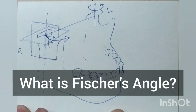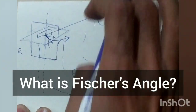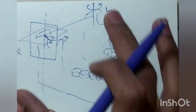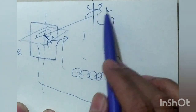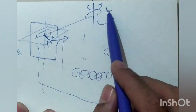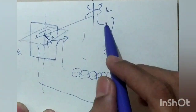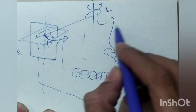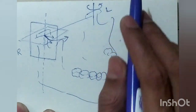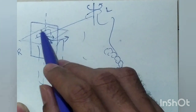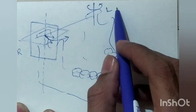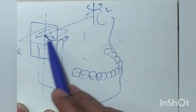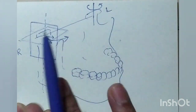What is Fisher's angle? Let us understand by simply looking at the diagram. This is our mandible, with left condyle and right condyle. Now suppose the mandible is moving toward the left side. When the mandible moves in a lateral direction to the left, the left condyle will be the working condyle and the right condyle will be the non-working condyle.